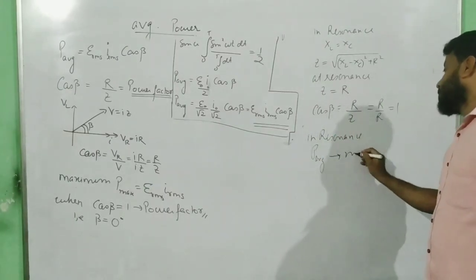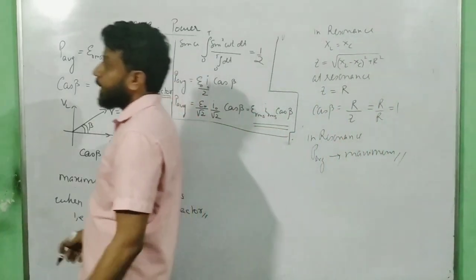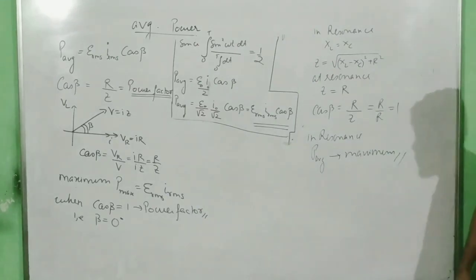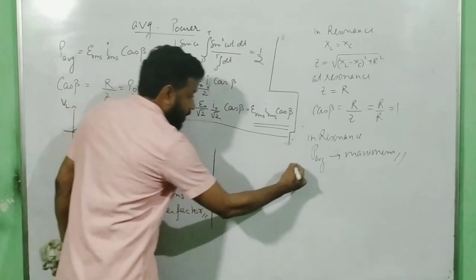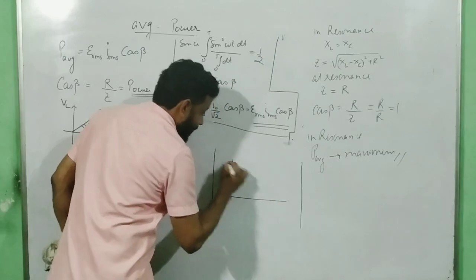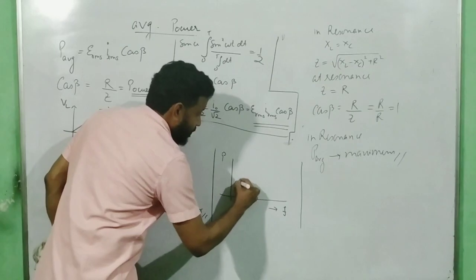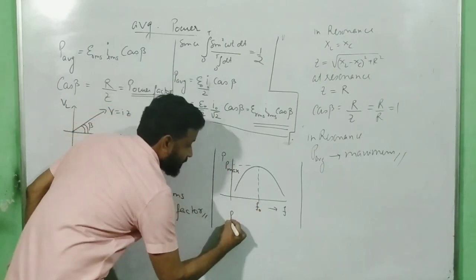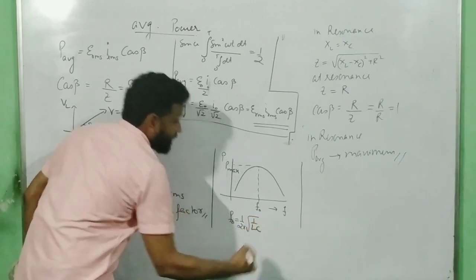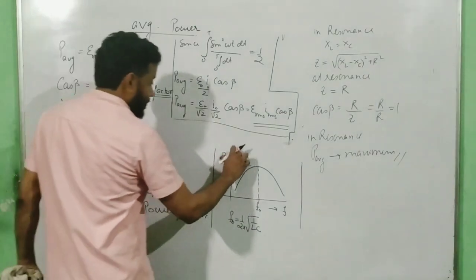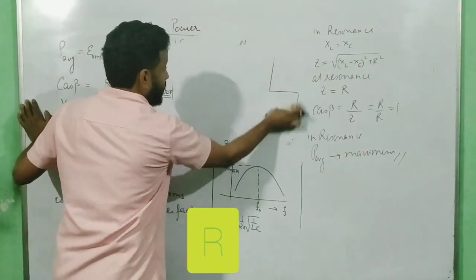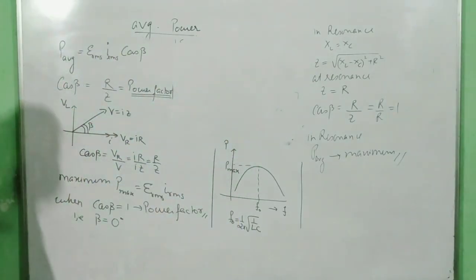This is a very important conclusion — that is why resonance is so important: the power in the circuit becomes maximum. If we plot the power function versus angular frequency, the graph attains a maximum value P_max at F naught, which equals 1 by 2π root over of 1 by LC.